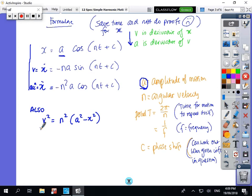And there's another useful formula: V² = N²(A² - X²). A is not acceleration, A is the amplitude of the motion. N is the angular velocity. Period T equals 2π/N, which is also equal to 1 over the frequency.